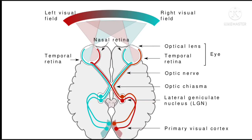Hum yeh keh sakte hai ki right eyeball ki inner side ya nasal side ko hit karengi. Isi tarah se yeh rays left eyeball ki bhi left side ko hit karengi, ya hum keh sakte hai ki left eyeball ki outer side ya temporal side ko hit karengi. Yeh sab hum sea green color ki light rays se samajh sakte hai. Yeh rays eyes mein aate huye lens ke dwara thodi si bent ho jaayengi.